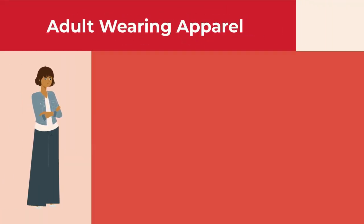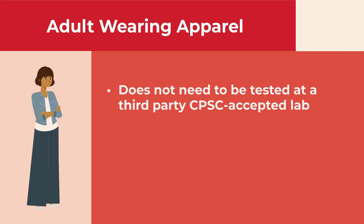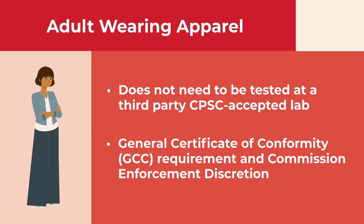There are additional requirements based on whether the garments are intended for adults or children. Adult wearing apparel does not need to be tested at a third-party CPSC accepted lab. Adult wearing apparel is required to have a General Certificate of Conformity, also known as a GCC, based on testing or a reasonable testing program, certifying compliance with 16 CFR Part 1610. The CPSC will not pursue enforcement actions against firms that fail to issue a GCC for adult wearing apparel that is exempt from testing pursuant to Section 1610.1.